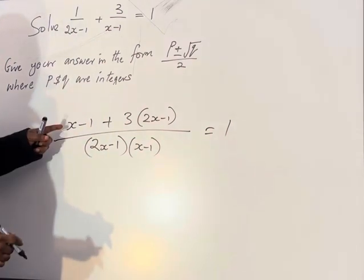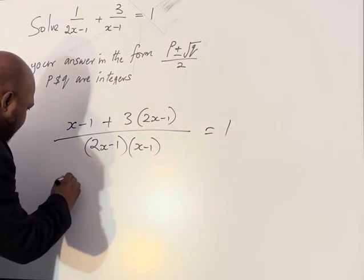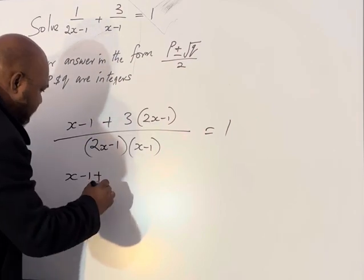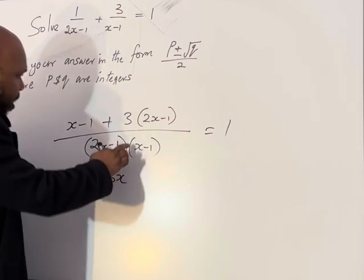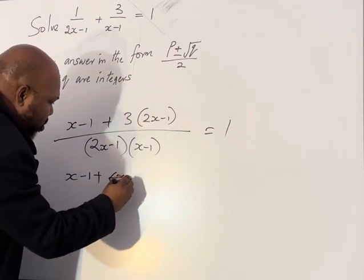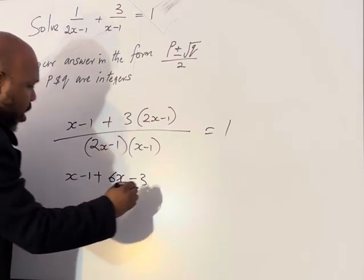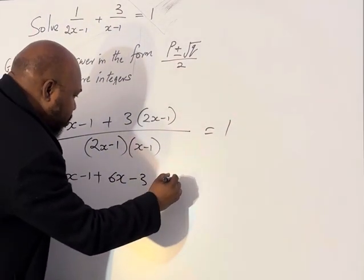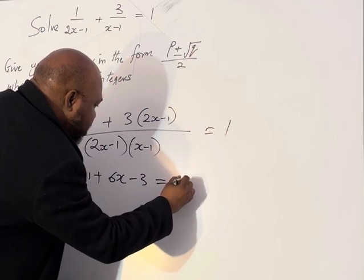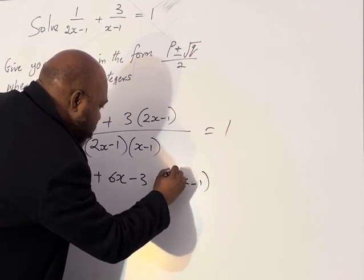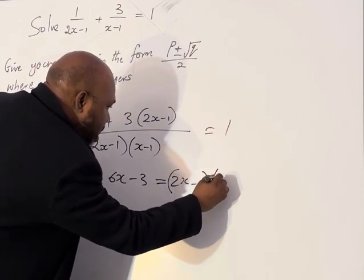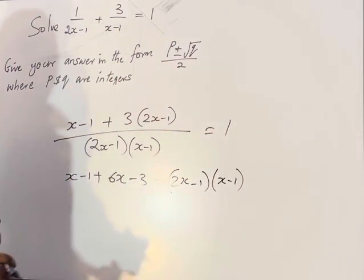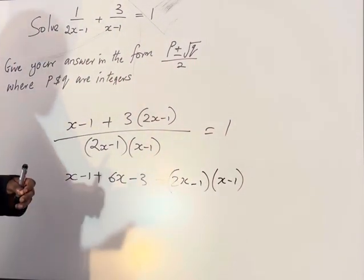As usual, you can cross multiply. We can expand the brackets, so we have (x-1) plus 3 multiplied by (2x-1) gives us 6x minus 3, equals (2x-1) into (x-1).